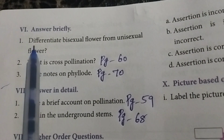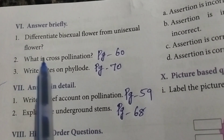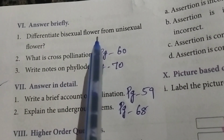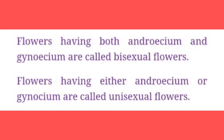Sixth Roman numeral: Answer briefly. First question: Differentiate bisexual flower from unisexual flower. Answer: Flowers having both androecium and gynoecium are called bisexual flowers. Flowers having either androecium or gynoecium are called unisexual flowers.